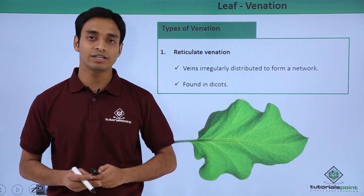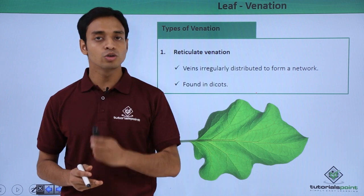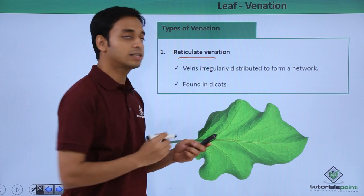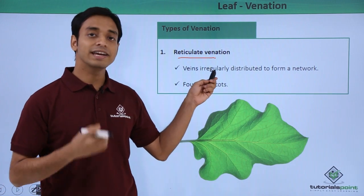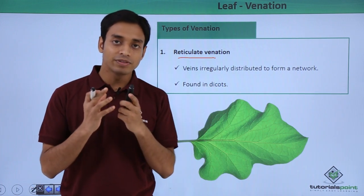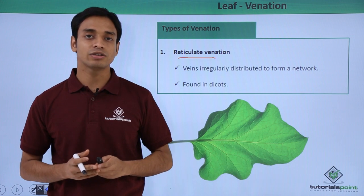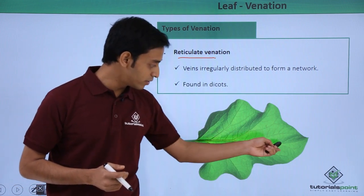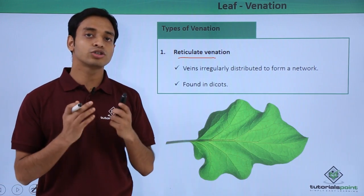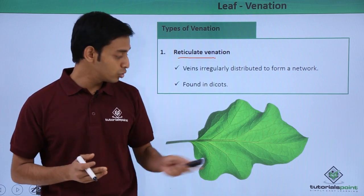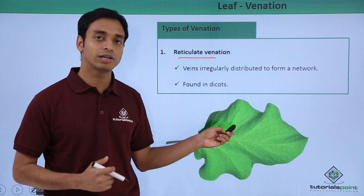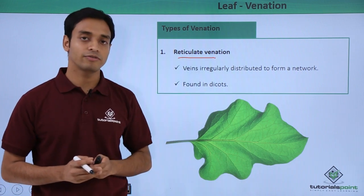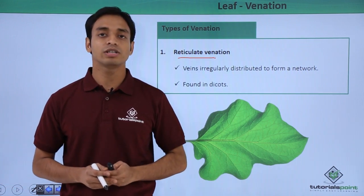There are basically two types of venation. The first type is known as reticulate venation. In reticulate venation, the veins are very irregularly and randomly distributed, and because of this random distribution they form a network. As visible in the picture, this is the mid-rib, and the other veins do not show a proper pattern of arrangement — they are totally randomly distributed. This type of irregular, random distribution of veins and veinlets is known as reticulate venation.